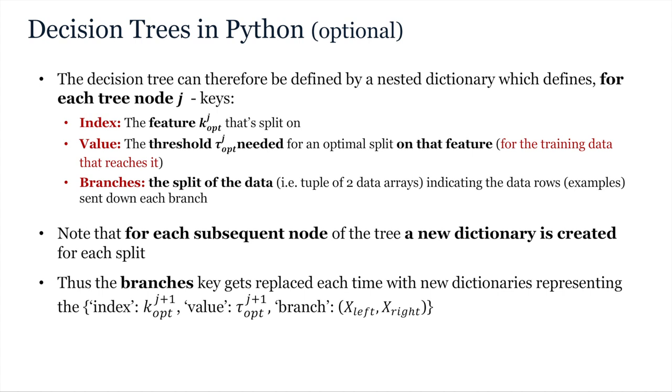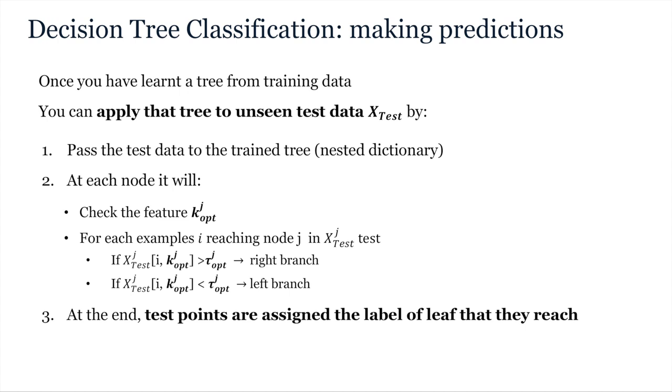Thus, algorithmically, each node of our tree is represented by a dictionary which stores for each node keys which define the index of the feature that is split on, the value of the threshold on that feature which optimizes the cost, and a tuple containing two data arrays, each containing the data examples for the left and right branches. This is for one level. For subsequent levels, the branch key is replaced with new dictionaries which represent the splits of the data for each child node. This results in the whole tree being represented by a nested dictionary. Importantly, once you reach a leaf node, the branch keys must record the label class assigned to that leaf node.